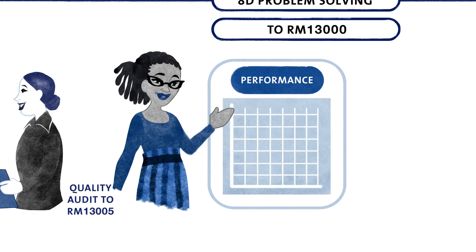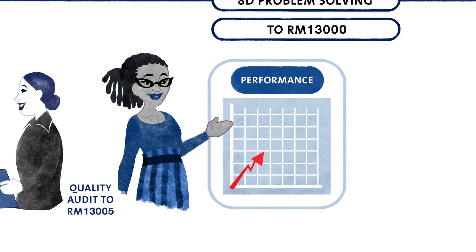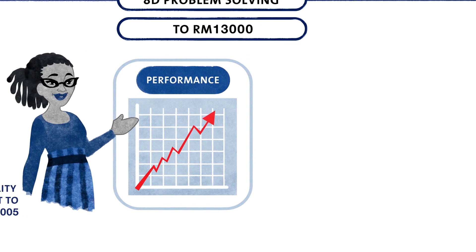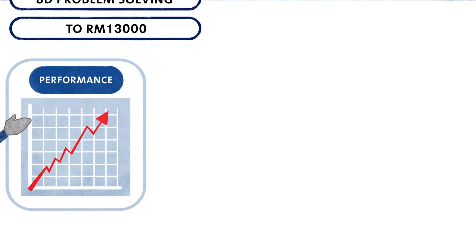The final stage of our defect prevention process is an effective audit of the quality system, manufacturing processes, products and special processes. This review reinforces compliance and can identify further opportunities for improvement.